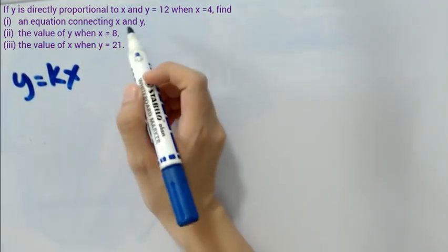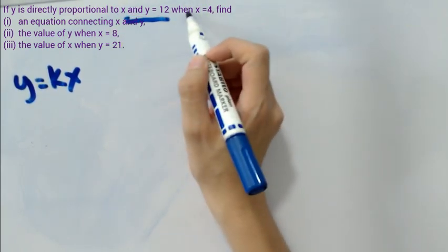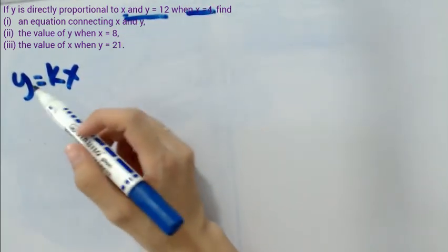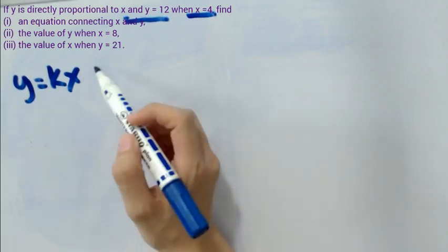From the given problem, we have y as 12 and x as 4. We're going to substitute y equals 12 and x equals 4.